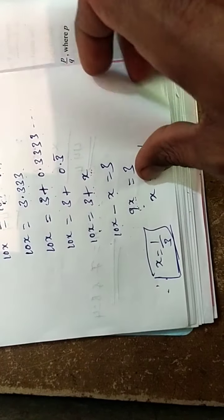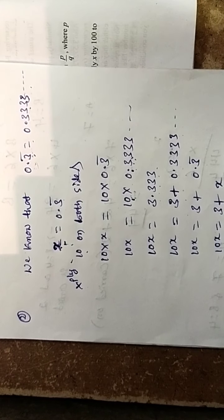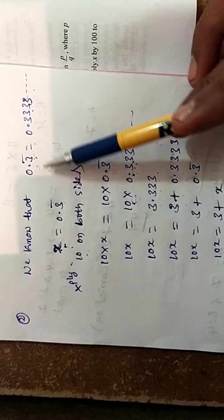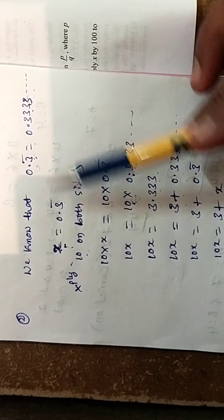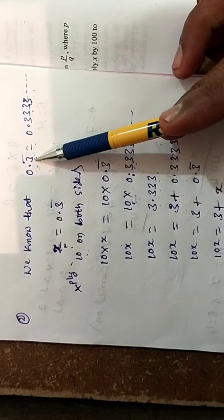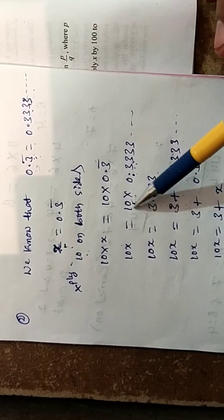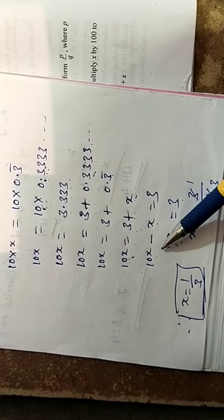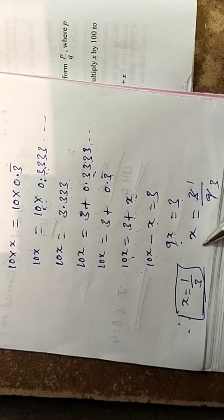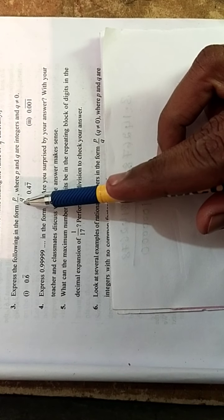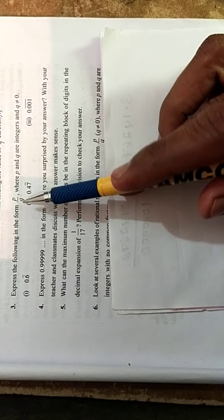So this is in the form of p by q. Hence it is expressed as p by q form where p and q are integers. So one number repeating means multiply by 10, two numbers repeating means multiply by 100, three numbers means multiply by 1000.